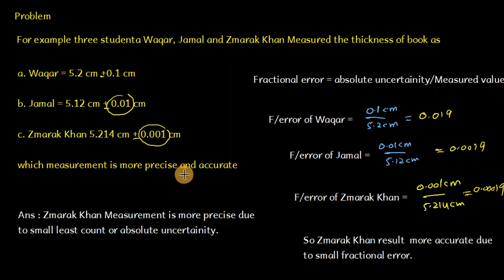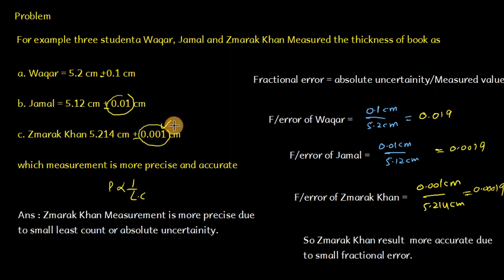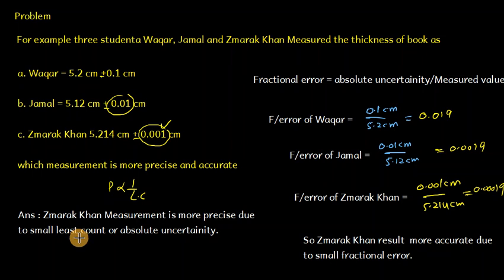Which measurement is more precise and more accurate? For precision, it is inversely proportional to least count. The measurement with the smallest absolute uncertainty is the most precise. Therefore, Zmarag Khan's measurement with absolute uncertainty of 0.001 cm is the most precise.